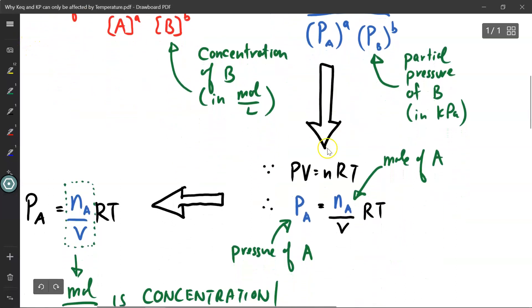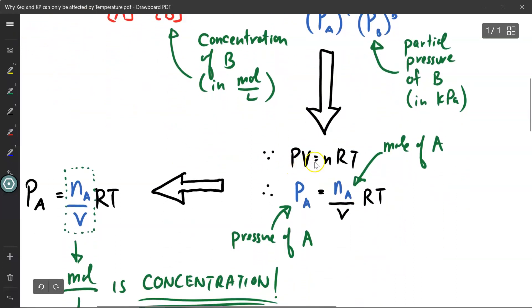Moving ahead, we know the ideal gas law says that PV is equal to nRT, where P is pressure, V is volume, n is the number of moles, R is the universal gas constant, and T is the temperature measured in kelvins. If I rearrange this equation, then pressure of gas A is equal to the moles of gas A divided by the volume times the R and the T.